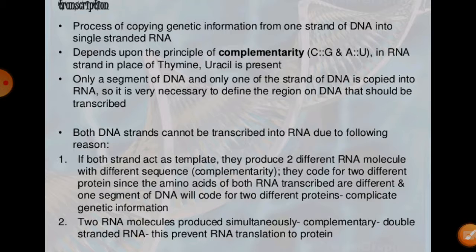If both strands coded for RNA, two different RNA molecules and two different proteins would be formed. One strand of RNA can form one protein, and another strand can form another protein, meaning duplicated proteins would be developed. So if both strands code for RNA, two different RNA molecules and two different proteins would be formed.